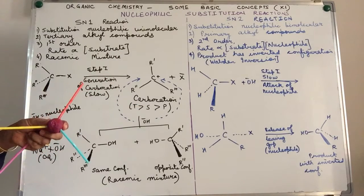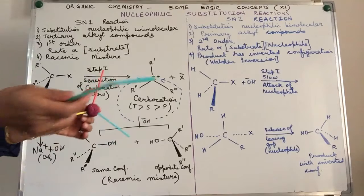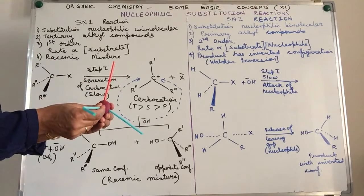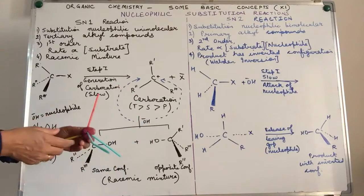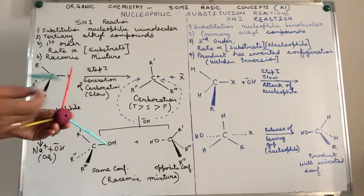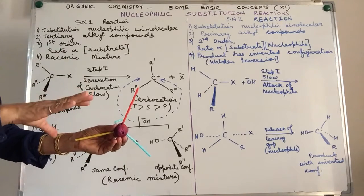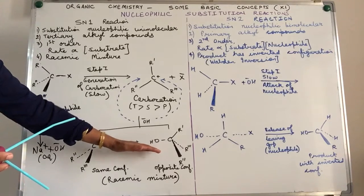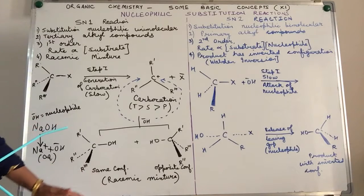The hydroxyl ion can attack the carbocation from any of its ends, resulting in two types of arrangements. The groups will align themselves to maximum distance apart — tetrahedral arrangement again. Since the nucleophile can approach from the front or from the back, the product will have molecules with the same configuration as the original molecule, and also molecules with configuration opposite to the original. In other words, we have a racemic mixture.